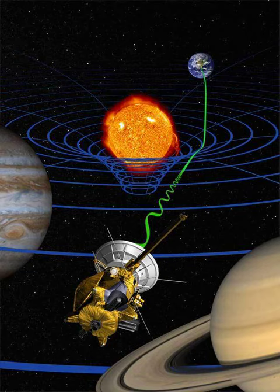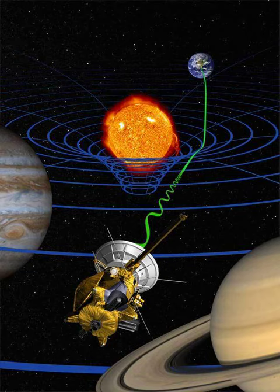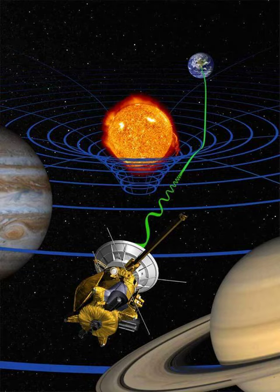The geometry of general curved surfaces was developed in the early 19th century by Carl Friedrich Gauss. This geometry had, in turn, been generalized to higher-dimensional spaces in Riemannian geometry, introduced by Bernard Riemann in the 1850s. With the help of Riemannian geometry, Einstein formulated a geometric description of gravity in which Minkowski's space-time is replaced by a distorted, curved space-time, just as curved surfaces are a generalization of ordinary plane surfaces. After he had realized the validity of this geometric analogy, it took Einstein a further three years to find the missing cornerstone of his theory — the equations describing how matter influences space-time's curvature.